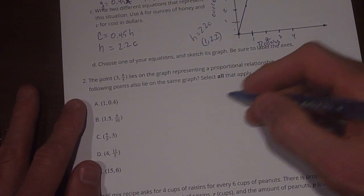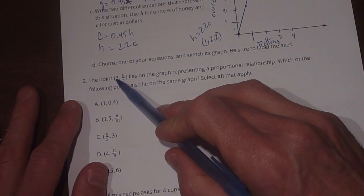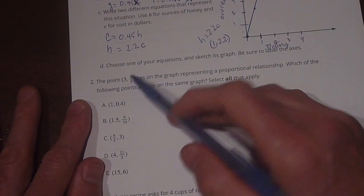All right, so we know that if we find our constant of proportionality, which is also our slope, from 0,0 with 3, 6 fifths, that we'll be able to find our equation.